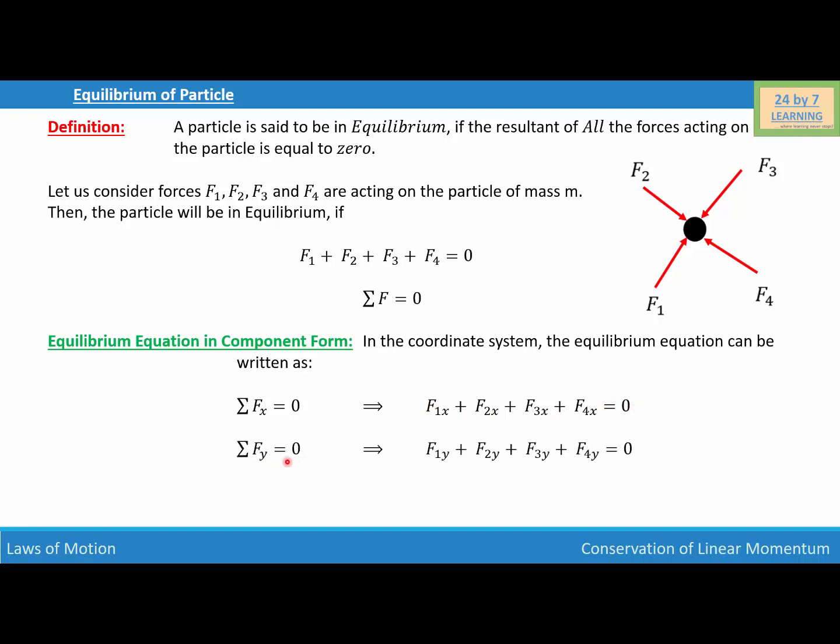Sigma Fy equals zero, which simply means that F1y plus F2y plus F3y plus F4y equals zero.